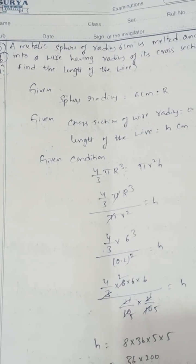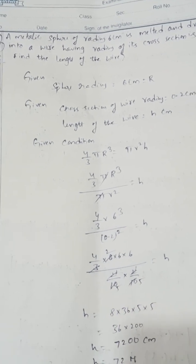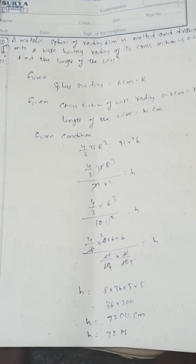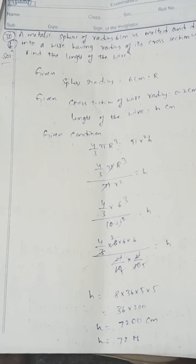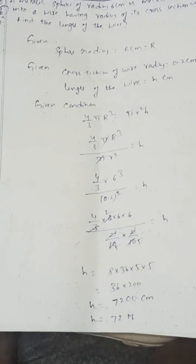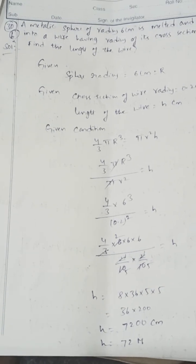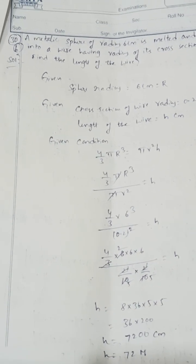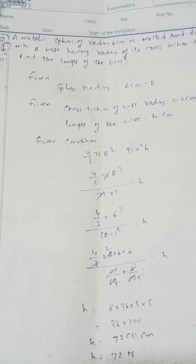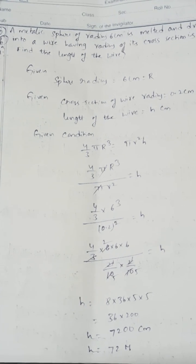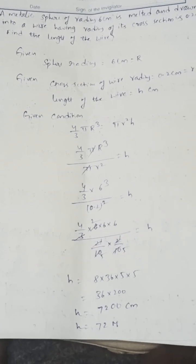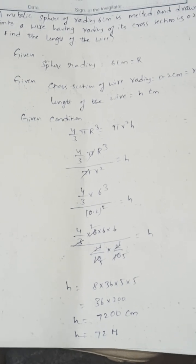A metallic sphere of radius 6 cm is melted and drawn into a wire whose cross-section has radius 0.2 cm. Find the length of the wire. The wire is in cylindrical form. Volume of sphere = volume of cylinder: (4/3)πr³ = πr²h. Solving, the length h equals 72 metres.